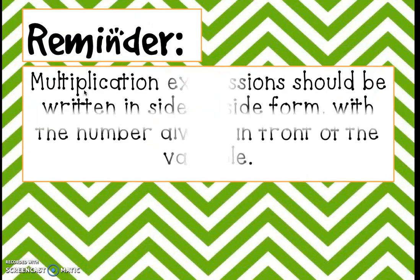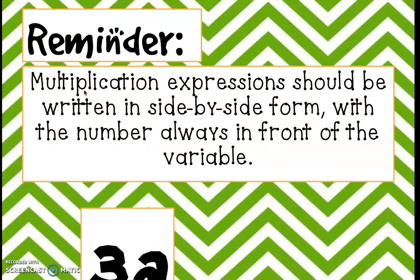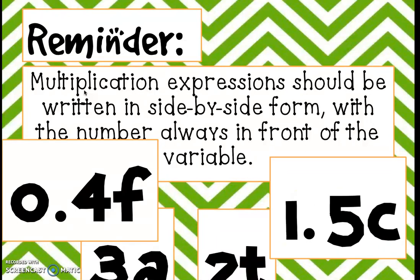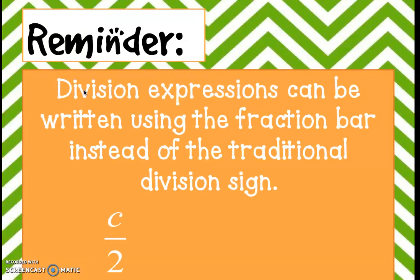When we write multiplication, we do it in a very specific way. We write it in a side-by-side fashion — a coefficient right next to a variable means to multiply, so we don't put the extra times sign, because the times sign can sometimes be mistaken for an X. So we just write the coefficient right next to the variable: 3A, 2T, 0.4F, 1.5C — these are all saying to multiply. Also, when we're dividing, we write that in a special way. We use the fraction bar to represent division. So C over 2 really says C divided by 2, T over 5 really says T divided by 5, and 3 over X says 3 divided by X.